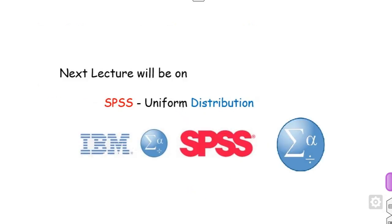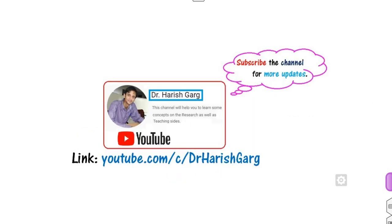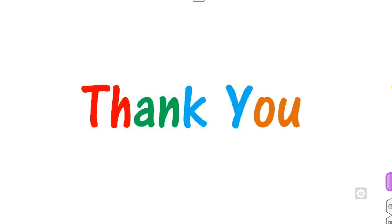This is the way you can solve negative binomial distribution problems in SPSS. In the next class, we will see how to solve continuous random variable distributions — specifically the uniform distribution in SPSS. Till then, follow the link for more updated videos. Best of luck, students — happy learning!